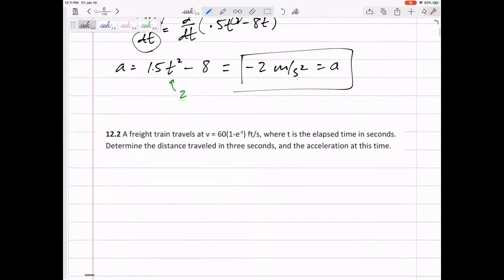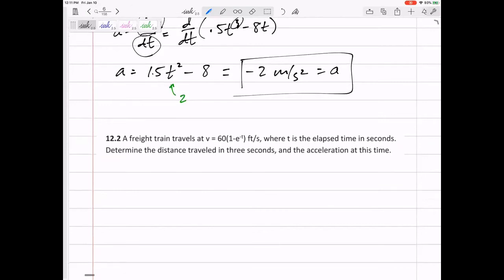What if our velocity was 60 times 1 minus e to the negative t? Y'all remember how to take derivatives and integrals of e to some power? Because I actually gave a problem like this on a test. Everybody failed it. So let me remind you.